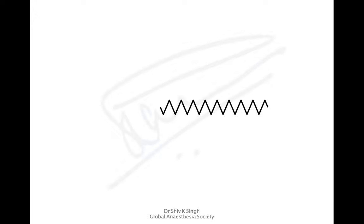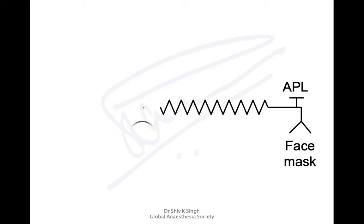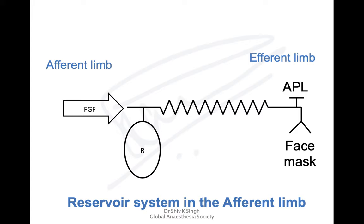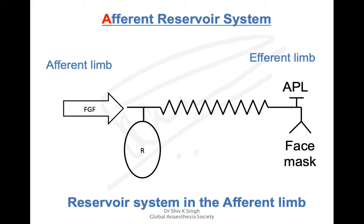For drawing the Mapleson system, you draw a wiggly line; at one end you draw a face mask — just a triangle — at the T you denote an adjustable pressure limiting valve, and at the other end you draw a reservoir bag. The end where fresh gas flows come in is called the afferent limb, and where gases are vented is the efferent limb. Since gases come to where the reservoir bag is, this is known as the afferent reservoir system. There is only one afferent reservoir system — Mapleson A, or the Magill system — and this is Miller's classification.